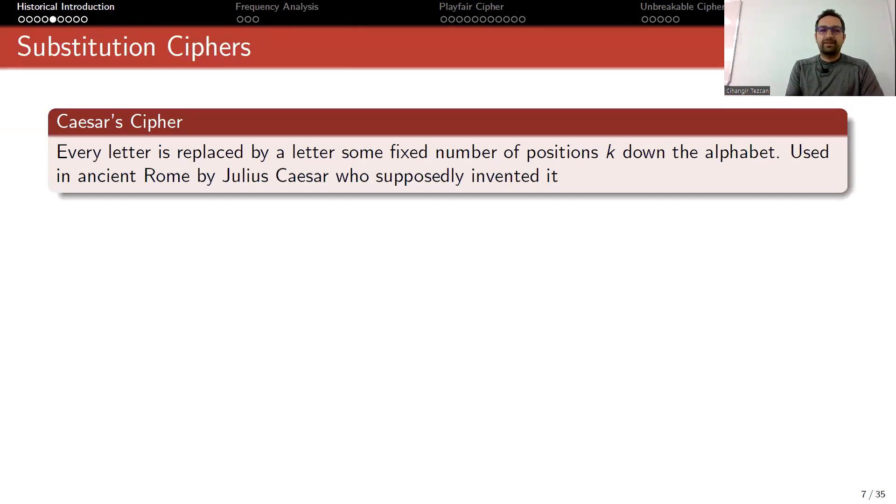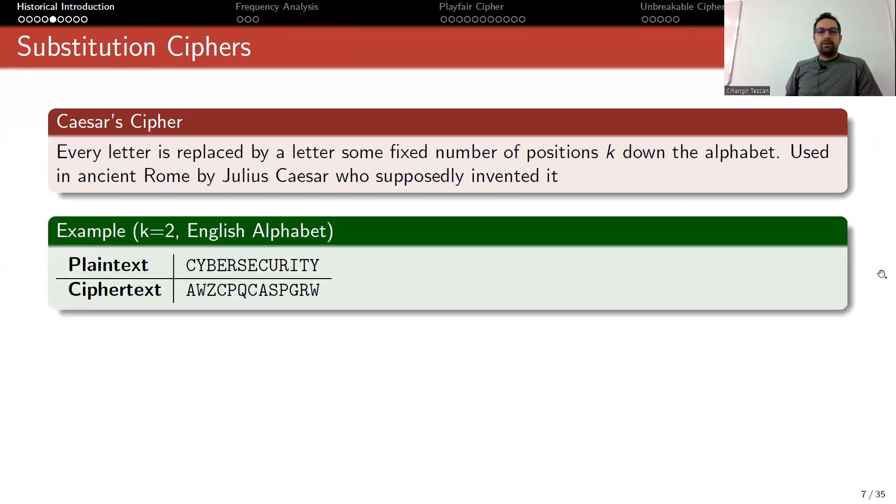Let's start with the basic and most famous example: Caesar cipher. Every letter is replaced by a letter some fixed number of positions k down the alphabet or up the alphabet, depending on how you define it. This was used in ancient Rome by Julius Caesar, who supposedly invented it.